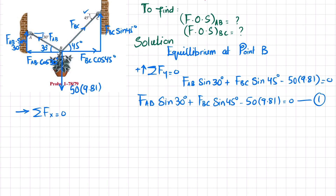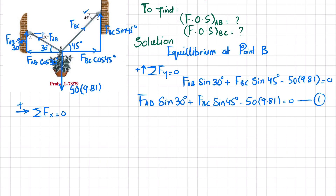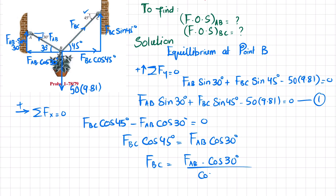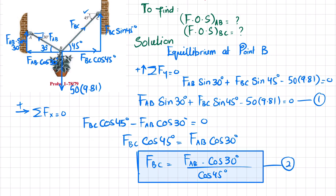The sum of all forces along the X direction equals zero, with the positive direction defined as shown. F_BC times cosine 45° minus F_AB times cosine 30° equals zero. Simplifying, F_BC times cosine 45° equals F_AB times cosine 30°. Let this be Equation 2.